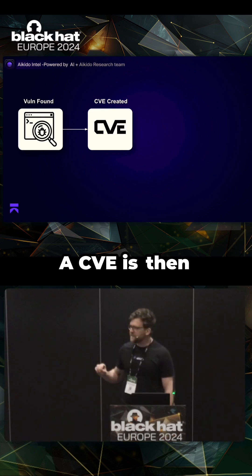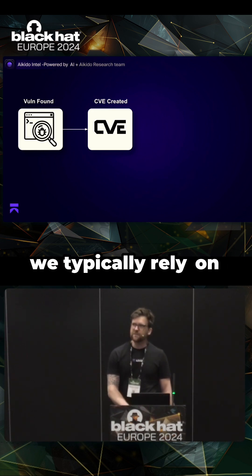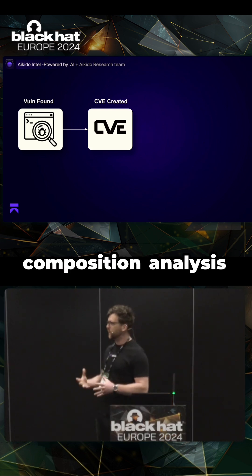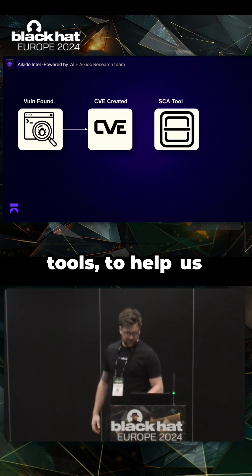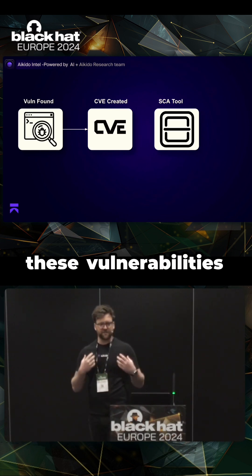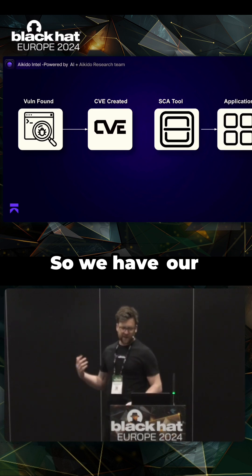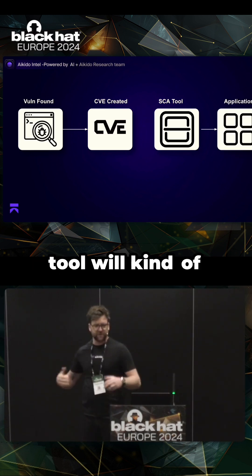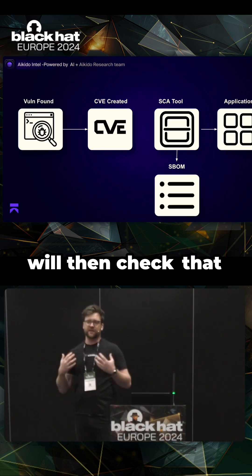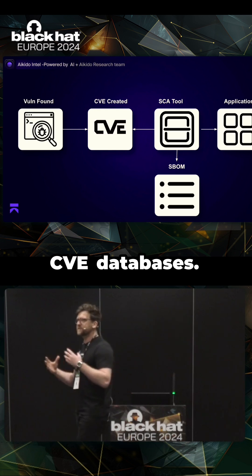A CVE is then created once that vulnerability has been found. We typically rely on tools like SCA tools — software composition analysis tools — to help us understand how these vulnerabilities affect our application. An SCA tool will create a list of all our dependencies, something like an SBOM, and then check that SBOM against the CVE databases.